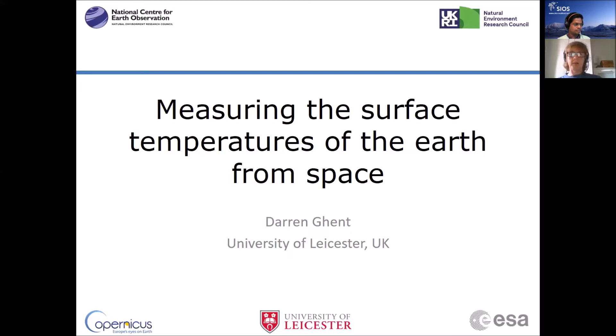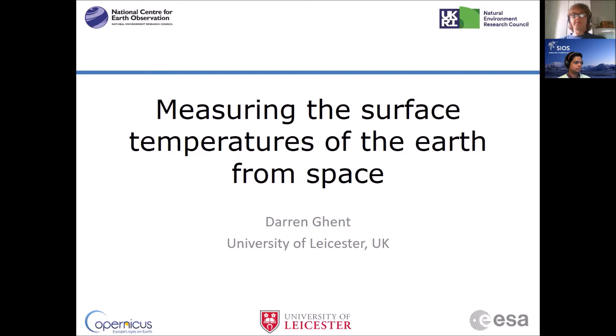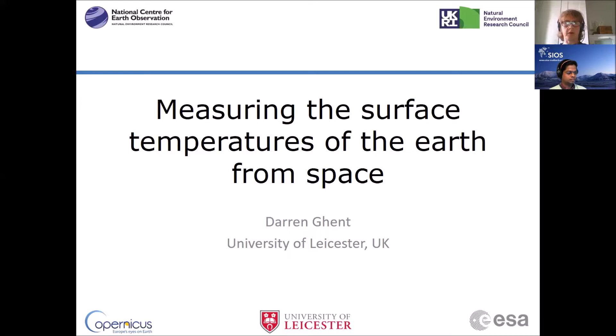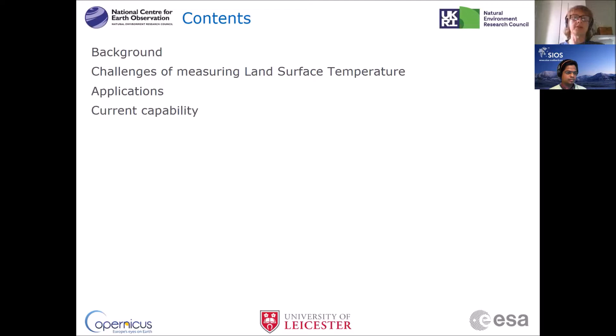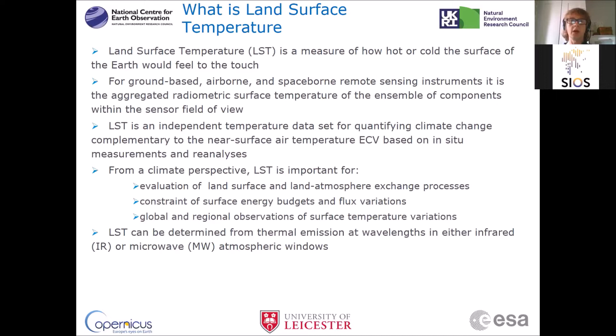This is the last lecture in this series, and it's all about thermal remote sensing — particularly low temperature thermal remote sensing, i.e., the temperature of the land, the ice, and so on, as opposed to high temperature events such as fire. I've broken this lecture down into four categories: a bit of background, some challenges in measuring land surface temperature, a set of slides on various applications, and finally the current state of the art capability.